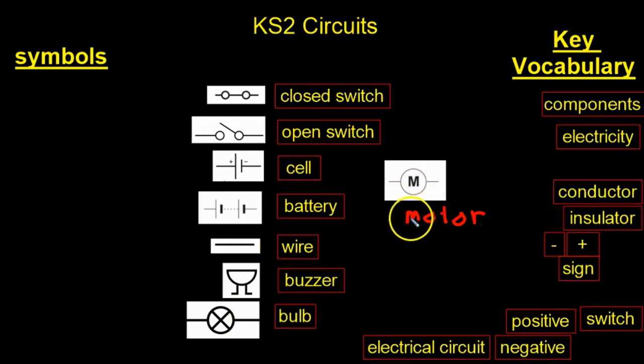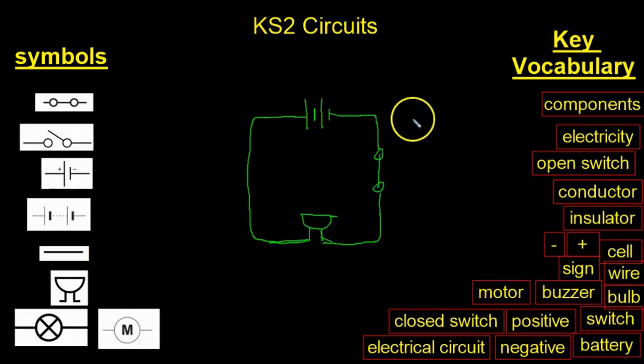As you can see, I've drawn a very simple circuit. I have my battery here with the positive here and the negative over here, and I'm using wire. I've made a very simple switch which is closed, and I have a buzzer.